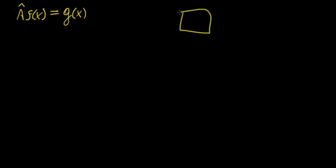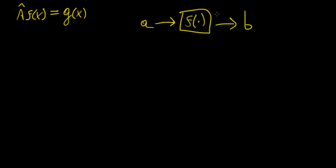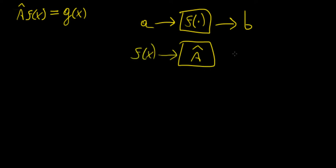By contrast, a function of some number basically takes in a number, let's call it A, and it outputs another number B. So the function itself can be thought of as a machine that turns one number into another by some rule. Then an operator, A hat, is going to take in a function and it is going to output another function.